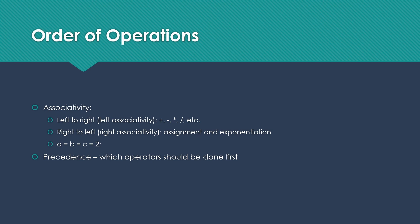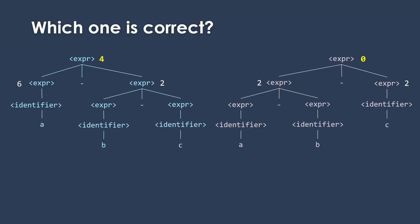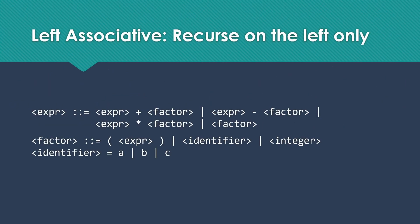Then we also have the concern of precedence, which operators should be done first. That will also need to influence our grammar construction. So let's look at our two trees. Which of these is correct? If we look at this, we want to do A minus B first because we normally work left to right. So the correct grammar is the one on the left.